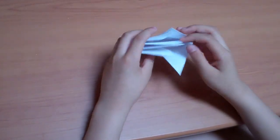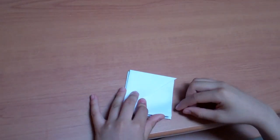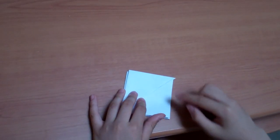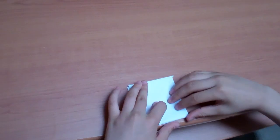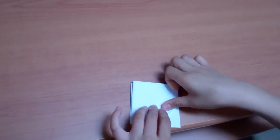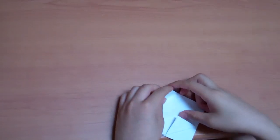So now you have something that looks like this. So now you take this corner and fold it to this middle crease. And do the same for the other three sides.